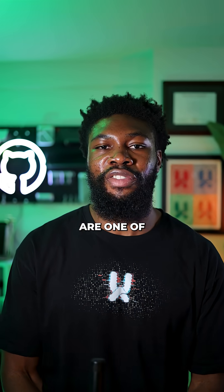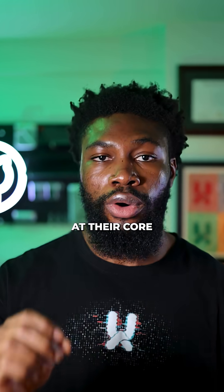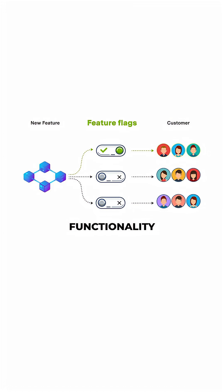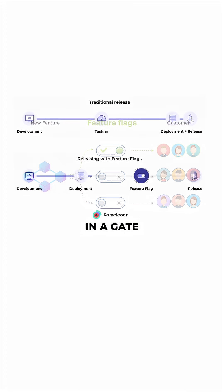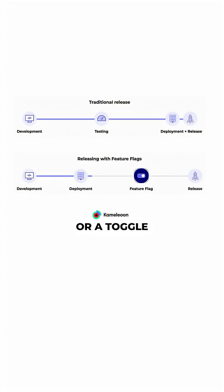Feature flags are one of the most underrated tools in software development. At their core, they let you toggle features on or off without changing your code or redeploying. It's basically wrapping a piece of functionality in a gate, and that gate is controlled by a config value — usually an environment variable, a remote config system, or a toggle in a feature flag service.